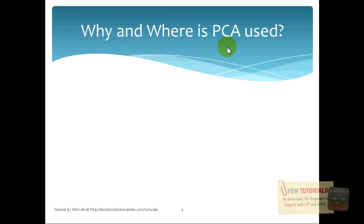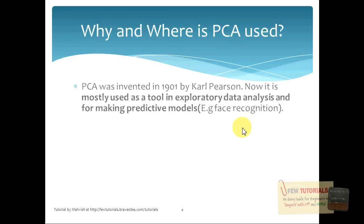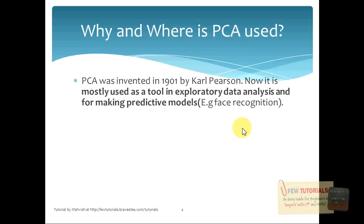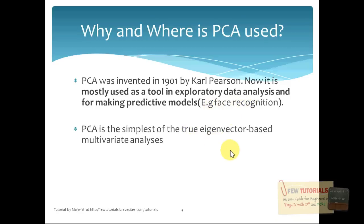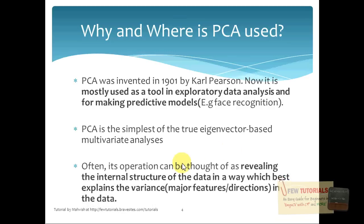Before we dive into what PCA is and how it works, let's look at why and where it is used. PCA was invented in 1901 by Carl Pearson and nowadays it is mostly used as a tool in exploratory data analysis and for making predictive models, for example in face recognition. It is the simplest of the true eigenvector-based multivariate analyses, and often its operation can be thought of as revealing the internal structure of the data in a way which best explains the variance in the data. By variance we could mean the major features of the data set or the directions in a data set. I will be taking both PCA technique itself and its relation to recognizing a face in parallel.